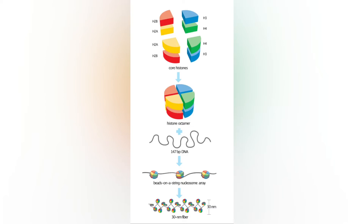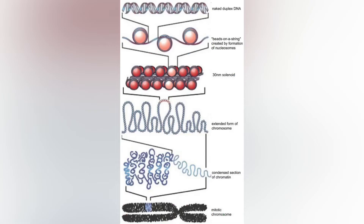The process is aided by factors known as histone acetyltransferases. HAT molecules facilitate the transfer of an acetyl group from a molecule of acetyl coenzyme A to the NH3+ group on lysine. When a lysine is to be deacetylated, factors known as histone deacetylases catalyze the removal of the acetyl group with a molecule of H2O.